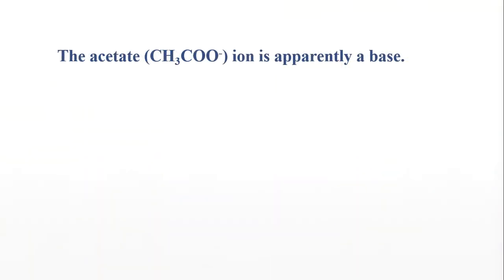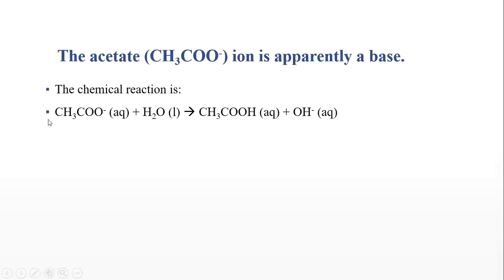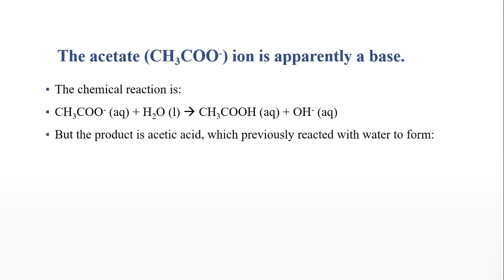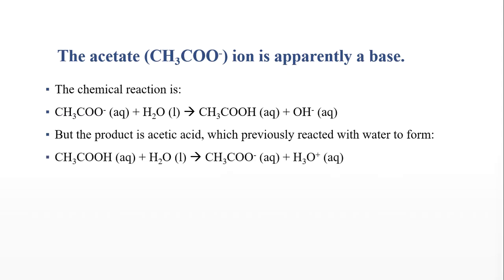Apparently the acetate ion is a base. The chemical reaction for this base when it reacts with water is that it takes up a proton, and water can donate protons — it can act as an acid — and then we form CH3COOH and the hydroxide ion. That molecule, CH3COOH, is acetic acid. So the product is acetic acid. And you remember that previously, when we added acetic acid to water, we formed the acetate ion and oxonium.